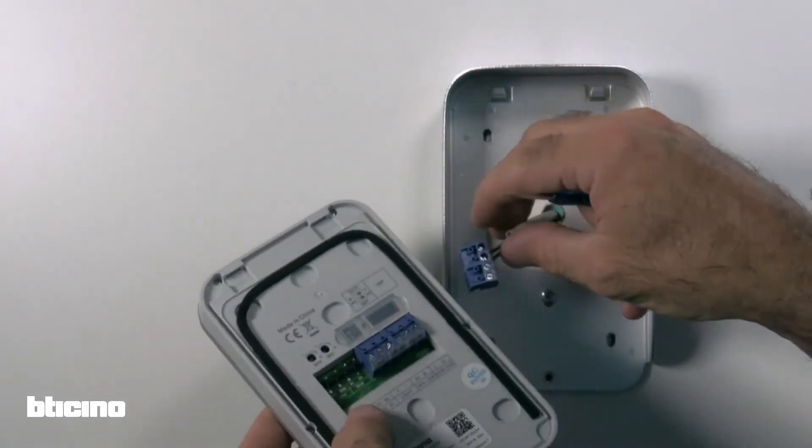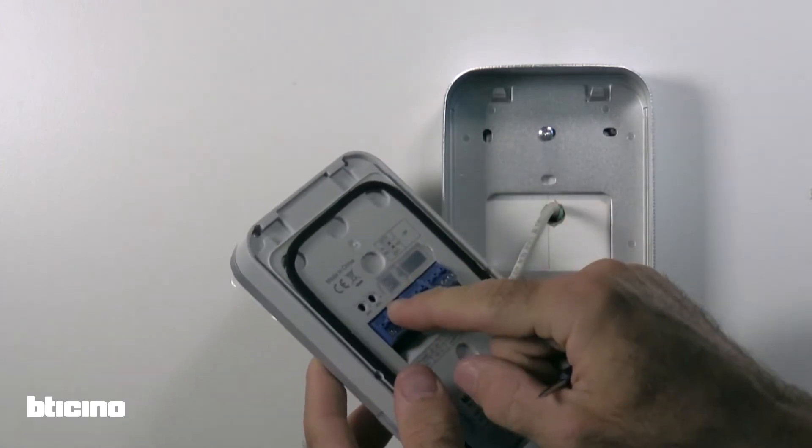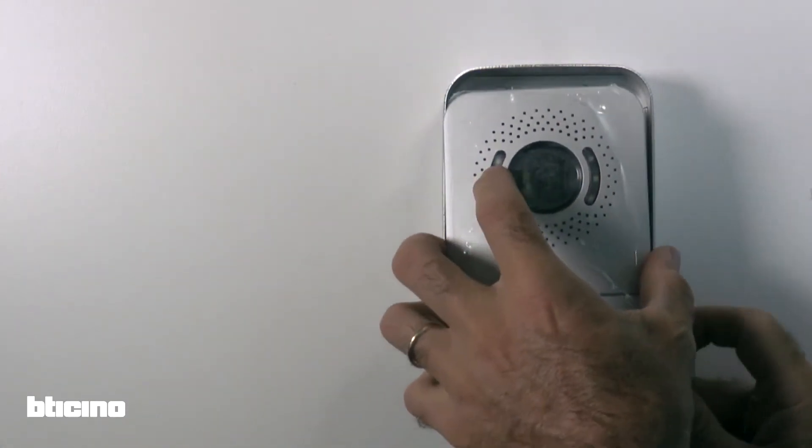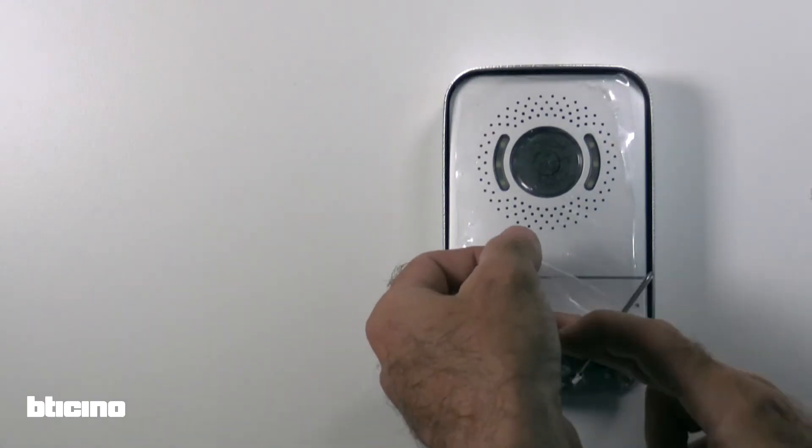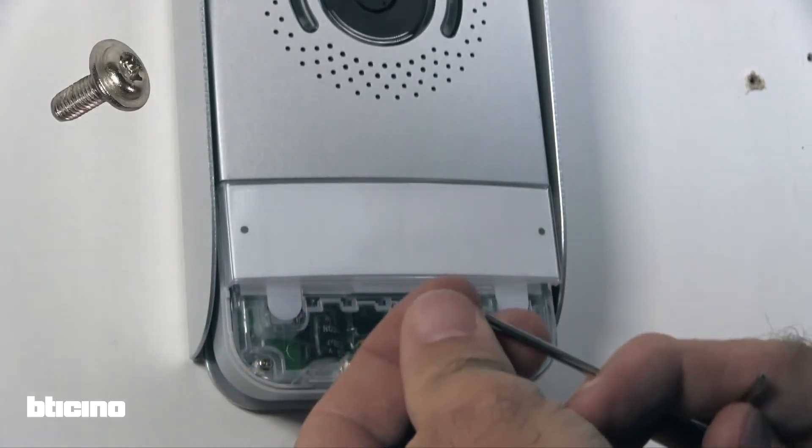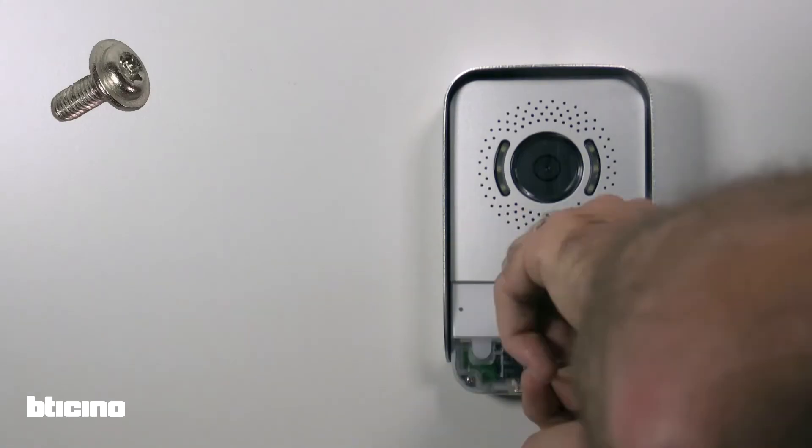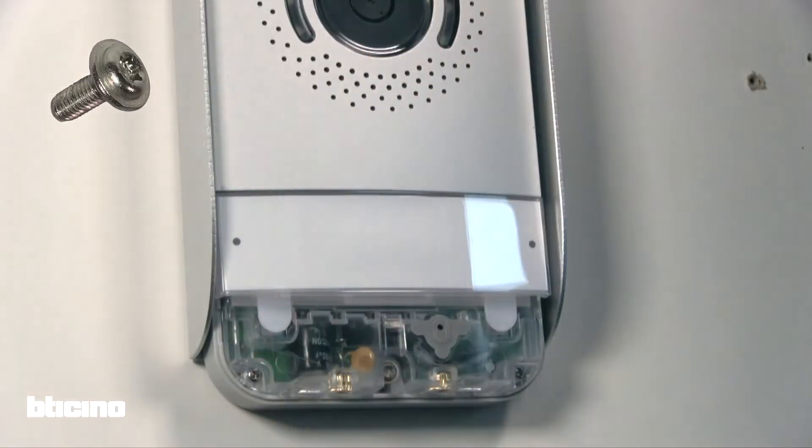Replace the terminal to the outdoor unit and attach the module on the rain cover. In your kit, you will find a M2.5 Torx screw. Use this to fix the external module to the rain cover.